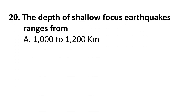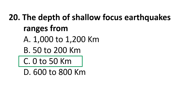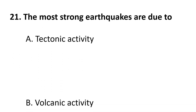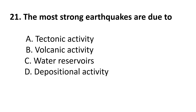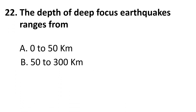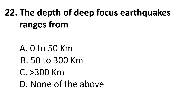Coming to the twentieth question: the depth of shallow focus earthquakes ranges from — A) 1,000 to 200 km, B) 52 to 200 km, C) 0 to 50 km, D) 600 to 800 km. The correct answer is C: 0 to 50 kilometers. Twenty-first question: the most strong earthquakes are due to — A) tectonic activity, B) volcanic activity, C) water reservoirs, D) depositional activity. The correct answer is A: tectonic activity. Twenty-second question: the depth of deep focus earthquakes ranges from — A) 0 to 50 km, B) 50 to 300 km, C) greater than 300 km, D) none of the above. The correct answer is C: greater than 300 kilometers.